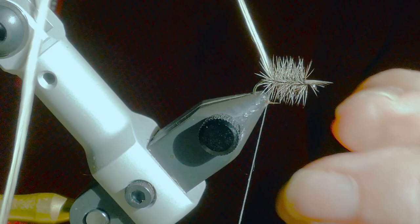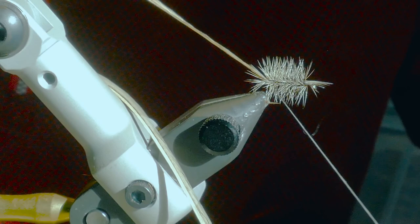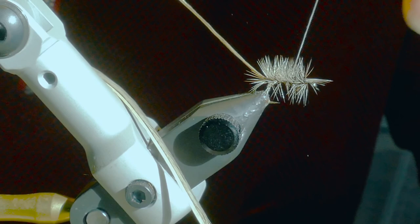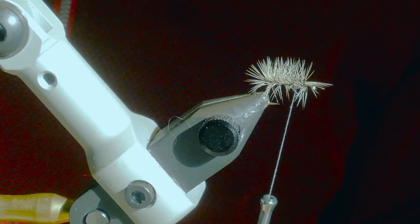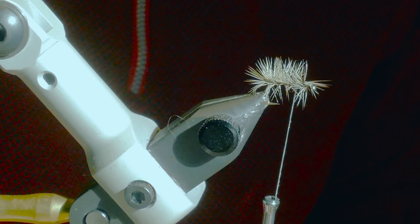Go down the body in fairly close turns right to the bend of the hook. Two or three turns down there and keeping your thread taut, go up towards the eye and you can snap that off.